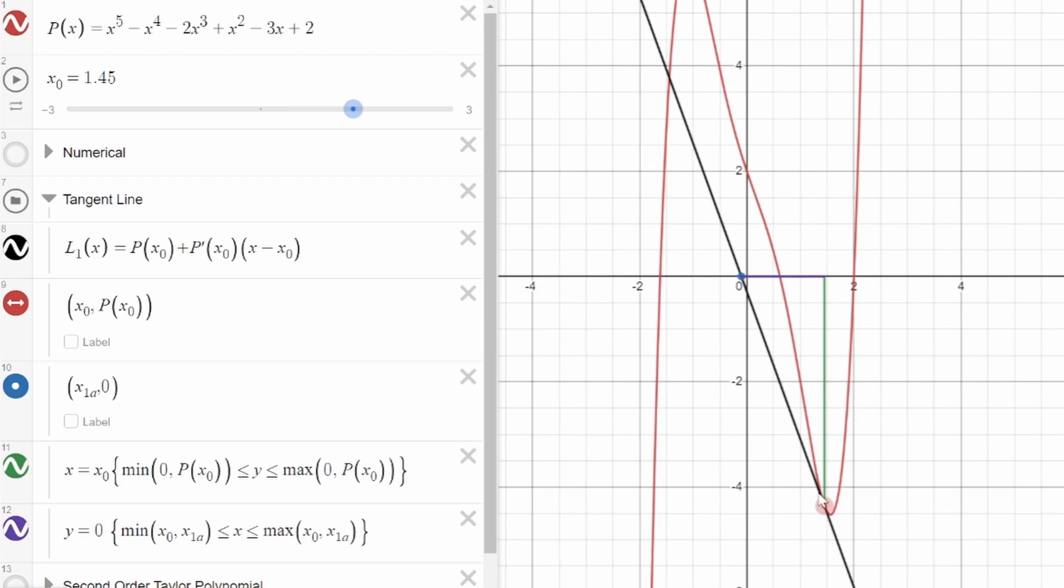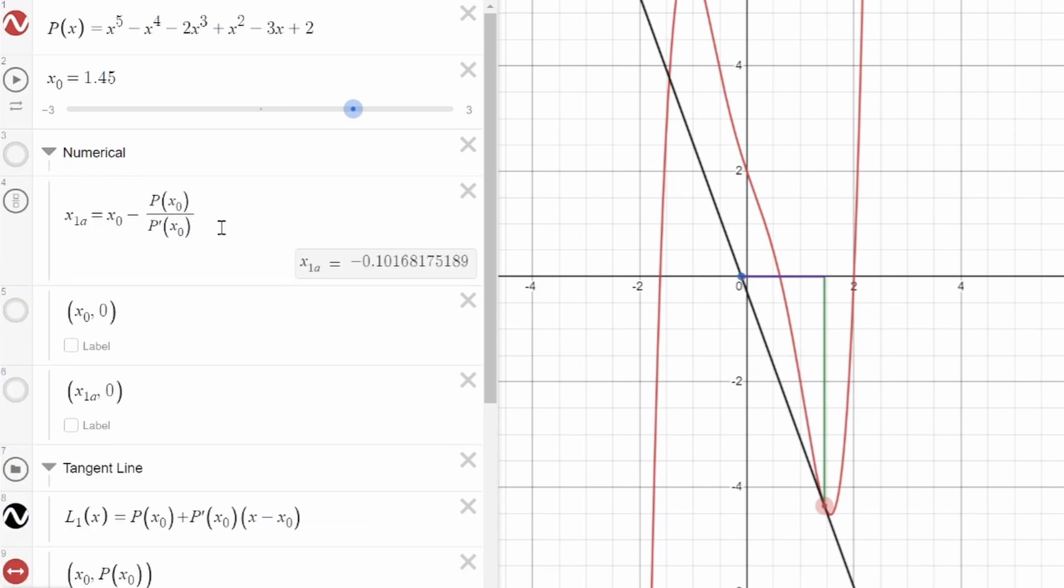In this case, the tangent line is the black line. The red dot is the x and y value of x0. And you can see that where the black line intersects the x-axis, this new blue dot is formed. And the x-coordinate of this blue dot is the approximation generated by Newton's method.